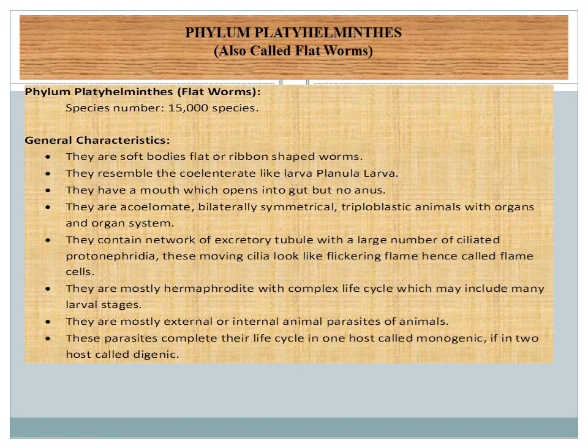Phylum Platyhelminthes is also known as flatworms. Platyhelminthes is a Greek word — 'platy' means flat, 'helminthus' means worms. About 15,000 species of Platyhelminthes are found around the world.